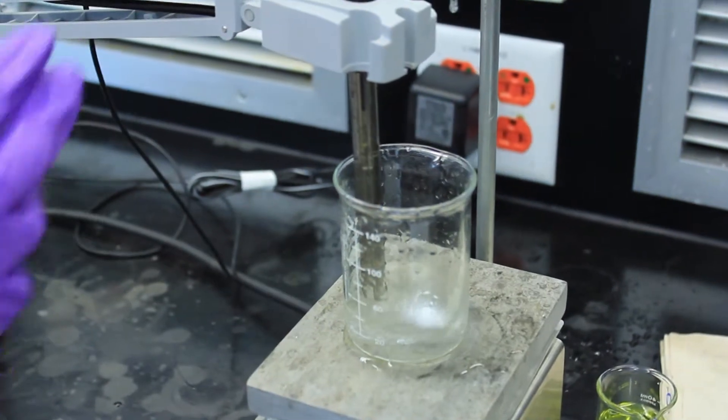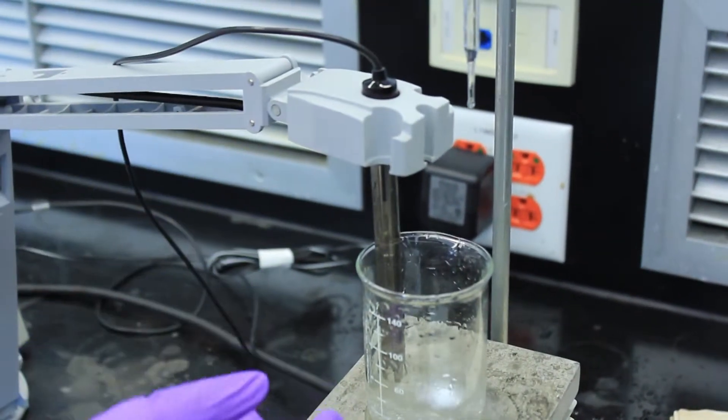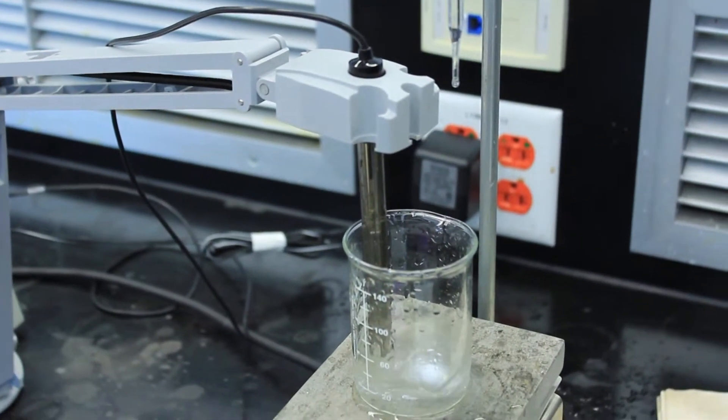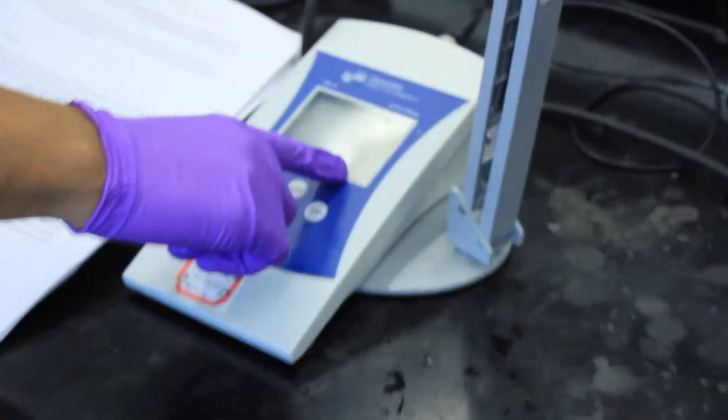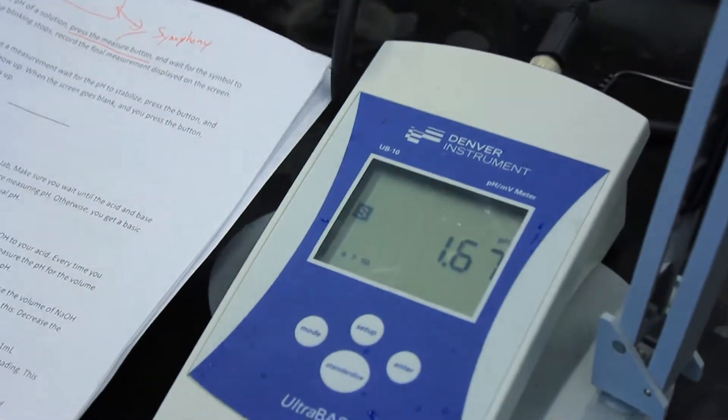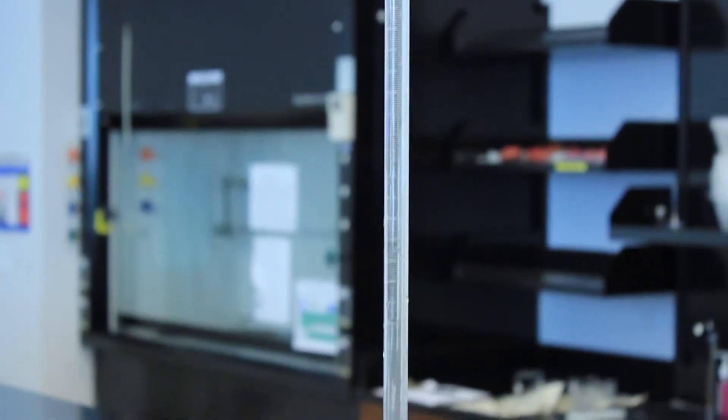Once you add sodium hydroxide to the burette and insert the pH meter into the solution, this is what it should look like. The stir motor should be started. Your pH meter will give you an initial reading. Make sure you record this.